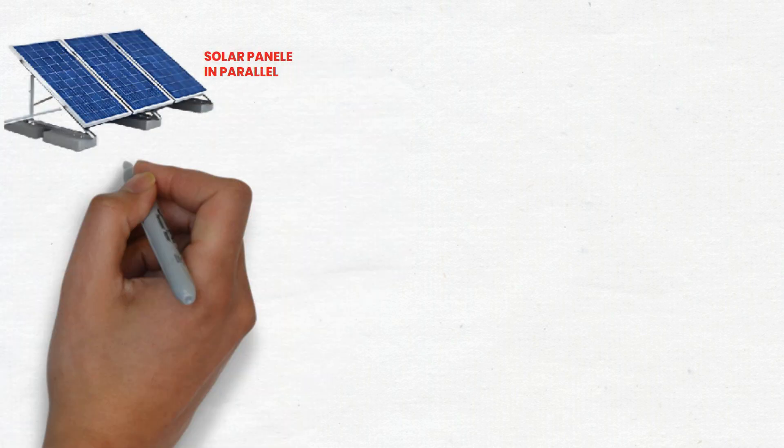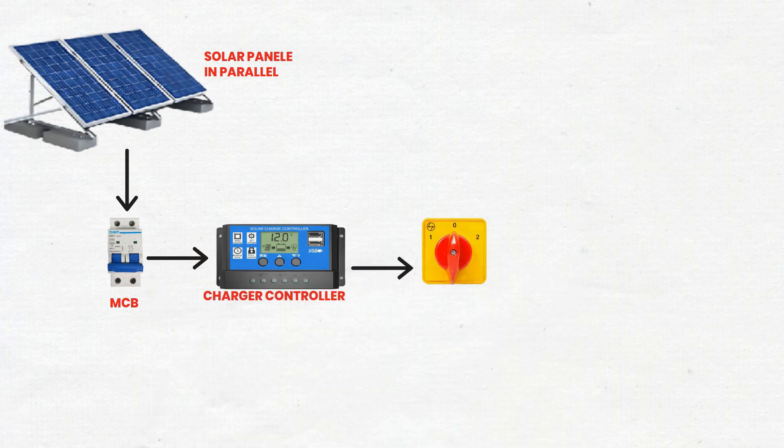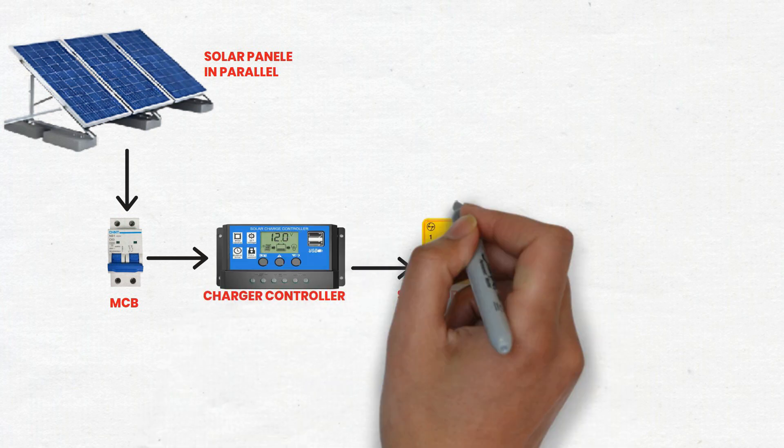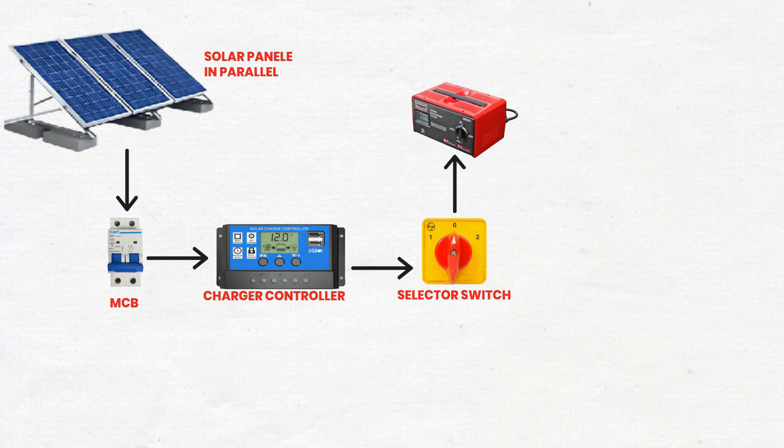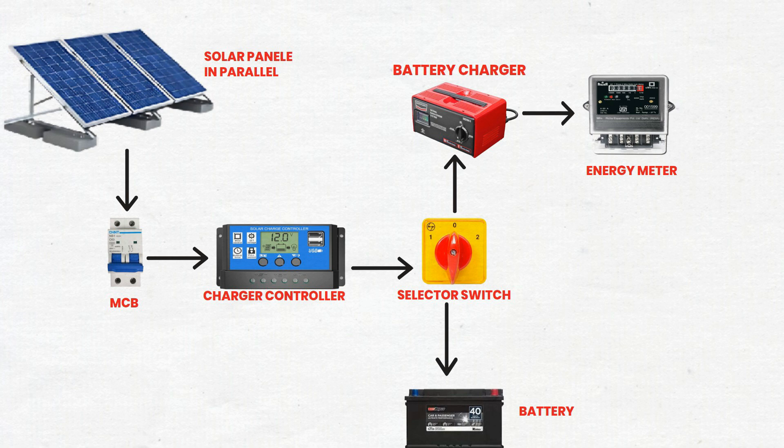Welcome to our step-by-step guide on setting up a solar power system. In this tutorial, we'll show you how to connect solar panels to various components like MCBs, a solar charge regulator, a rotary switch, batteries, a battery charger, and an energy meter. By following these steps, you'll learn how to efficiently and safely harness solar energy. Ready to go green and power your home with solar energy? Let's dive in.